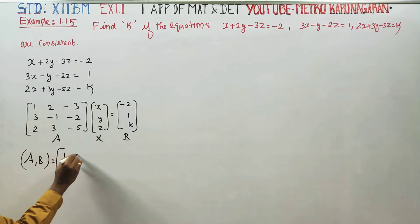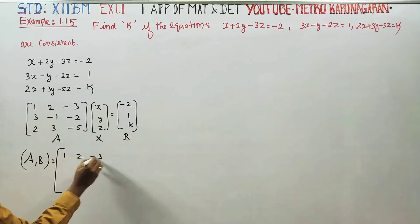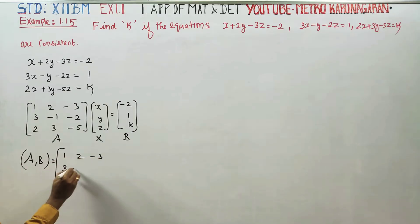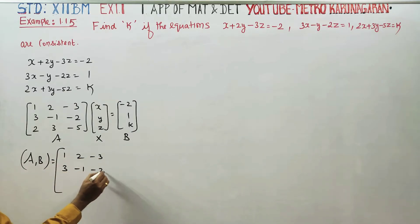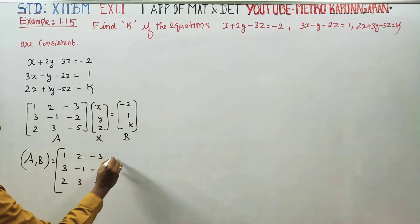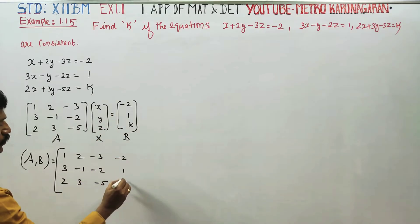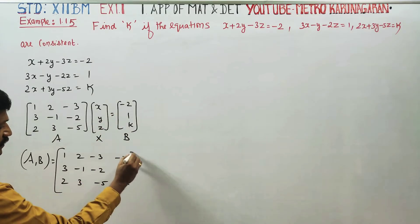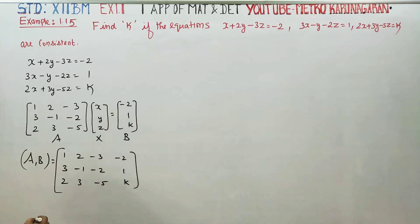Matrix A entries: 1, 2, minus 3 in row 1; 3, minus 1, minus 2 in row 2; 2, 3, minus 5 in row 3. The augmented column B is: minus 2, 1, k.